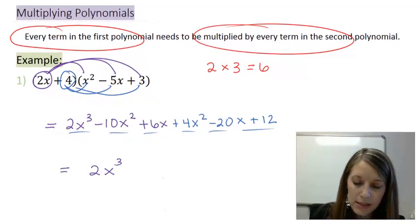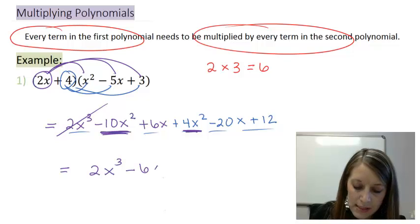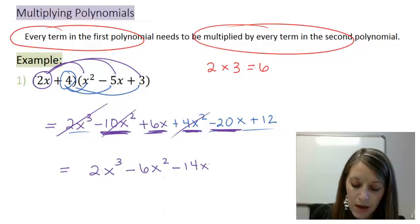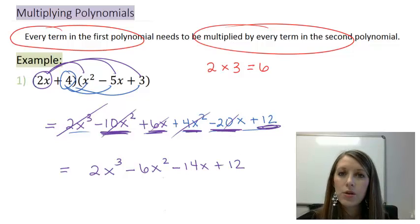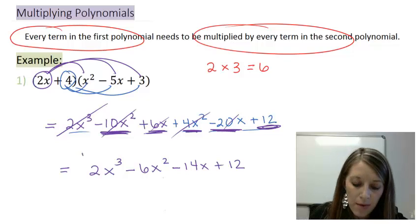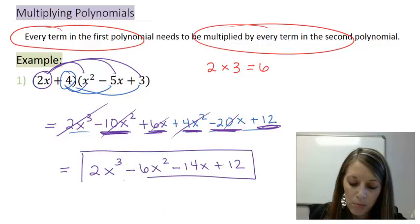So, I have 2x cubed with nothing to combine it to. I have negative 10x squared plus 4x squared, giving me negative 6x squared. I have positive 6x minus 20x, giving me a negative 14x. And then I have my constant term of 12. So, I just copy that down. So, at this point, I've combined all my terms. I've put it in descending order. And so, I've got my final answer to this problem here.